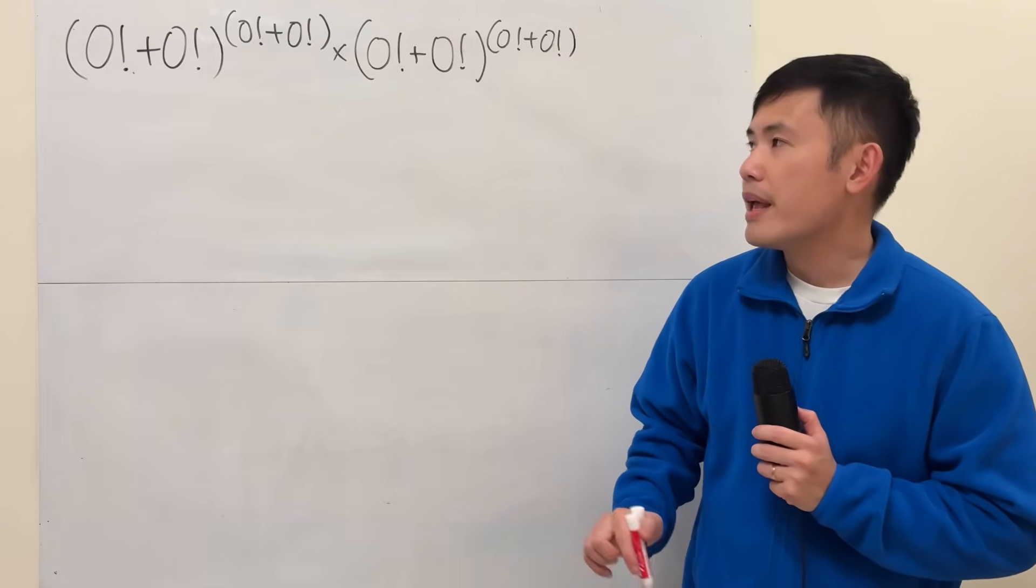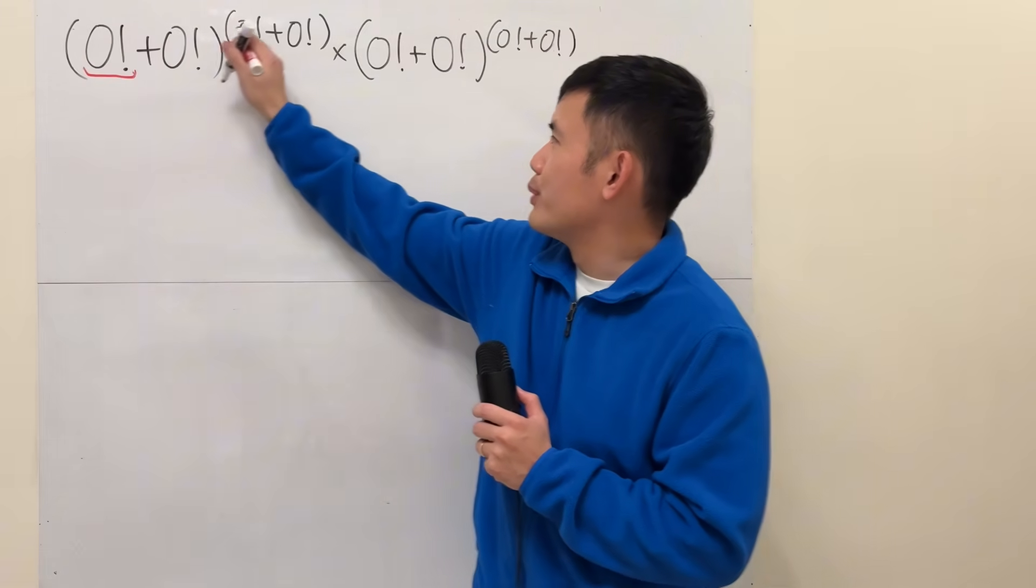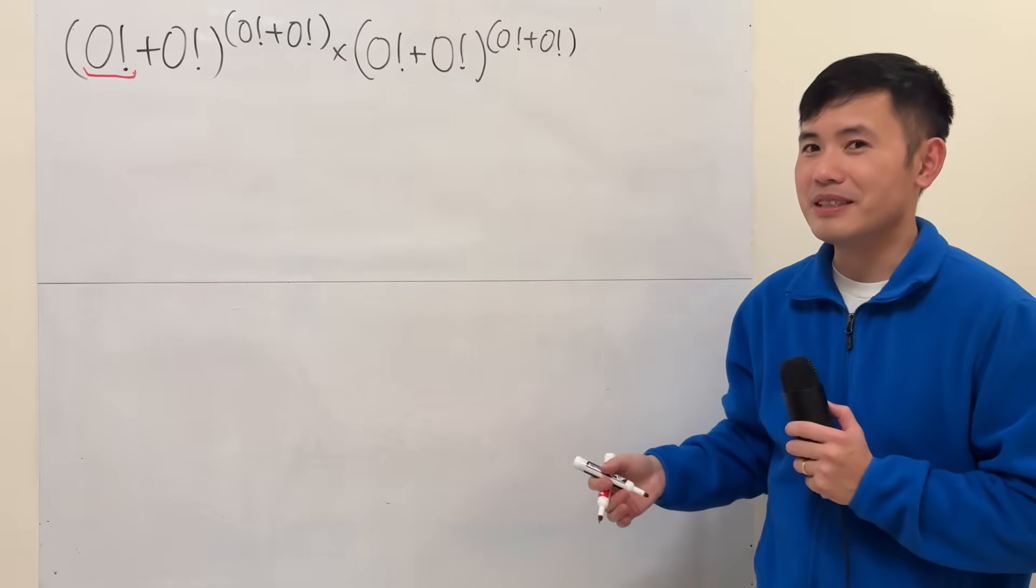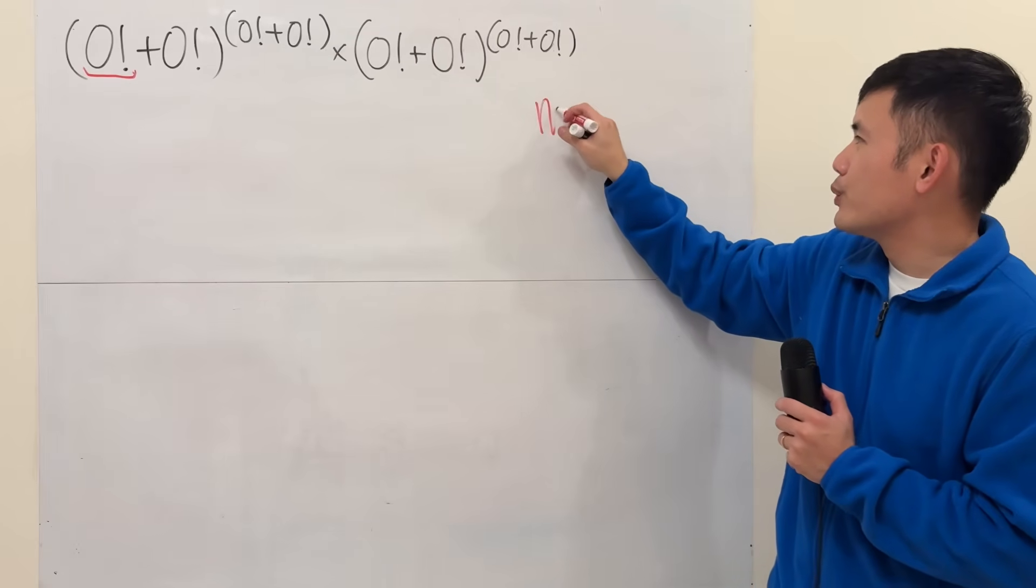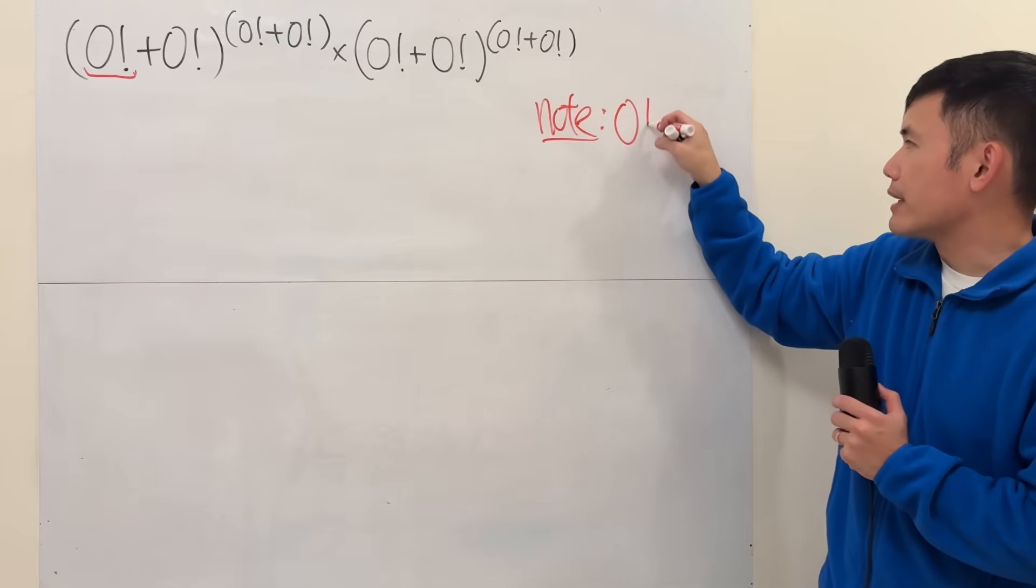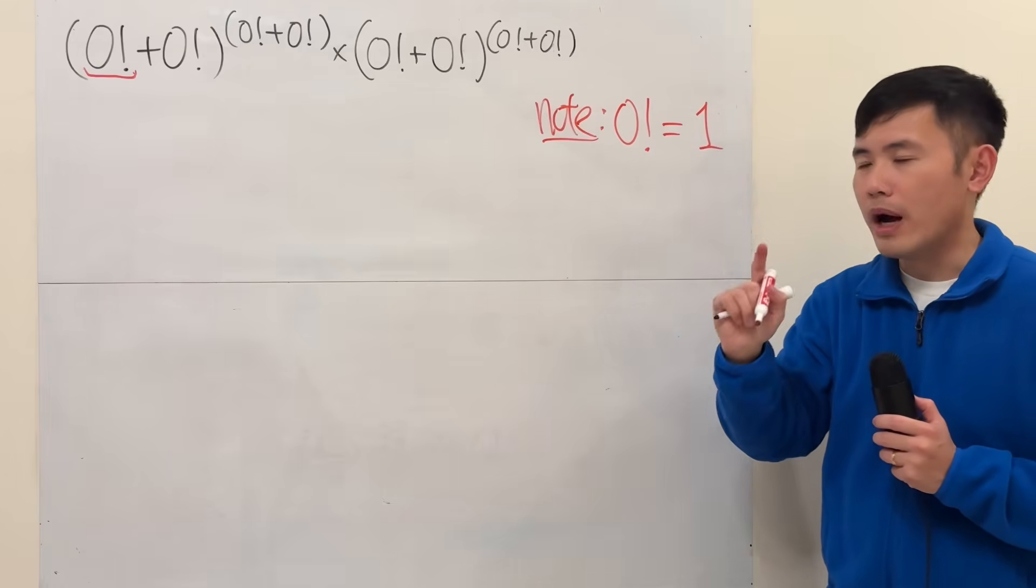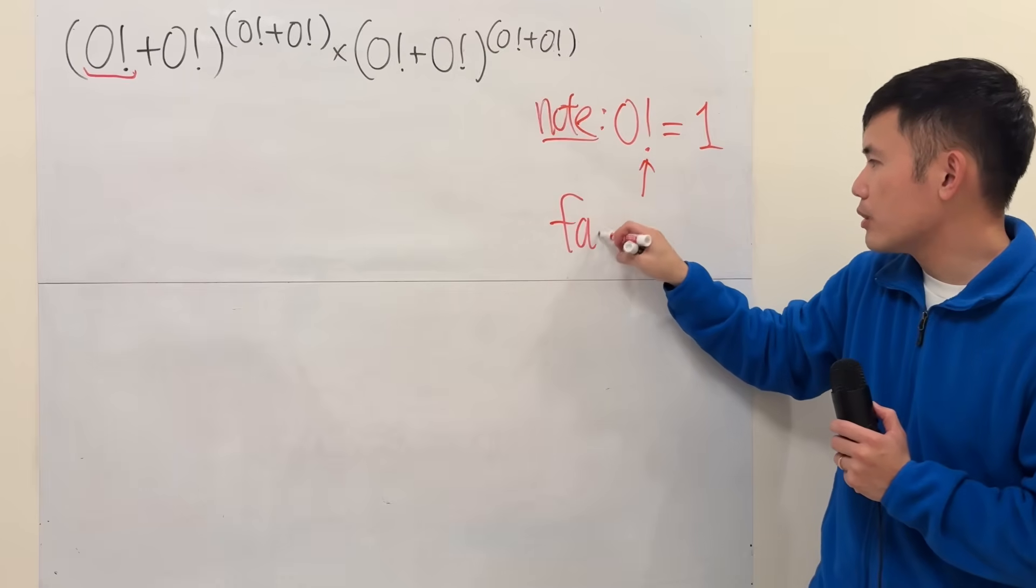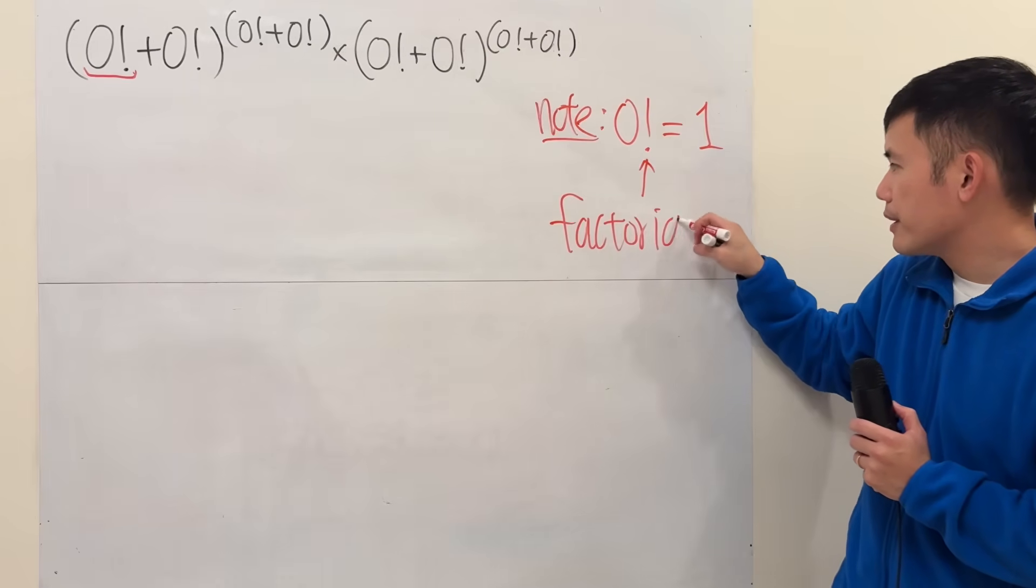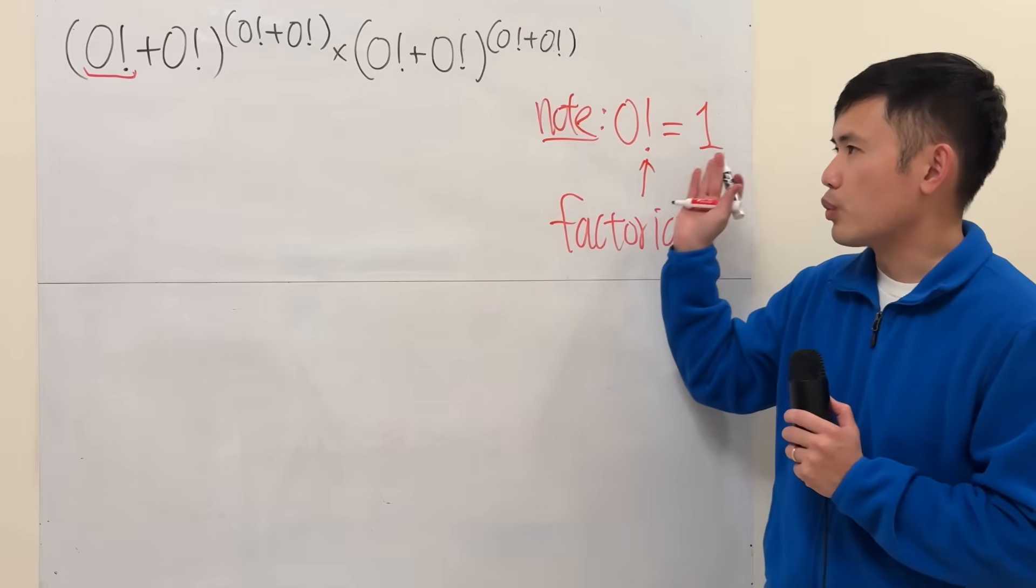I will tell you this thing is called the factorial. For this expression, I'll put on a note: if we have zero factorial, 0!, the answer to that is equal to one. This is called the factorial, and I'm going to explain this in detail later on. I will tell you guys why this is equal to one.